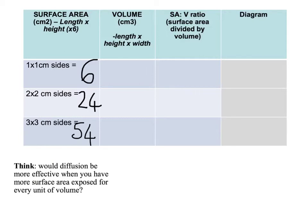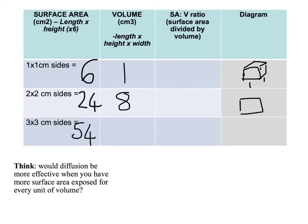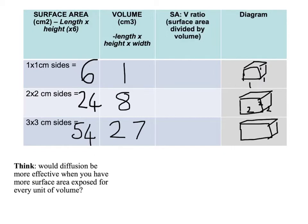Now let's work out the volume of each cube - that's length times height times width. The one by one by one cube would have a volume of one. The two by two by two, working out the volume, would be two times two times two which comes to eight. And the three by three by three, working out the volume, three by three is nine times three equals 27.